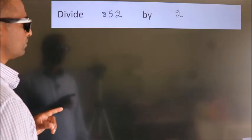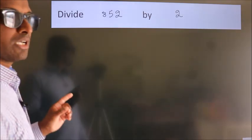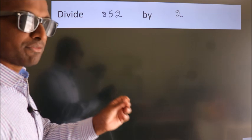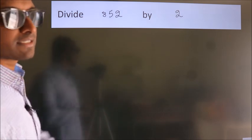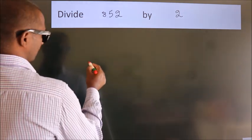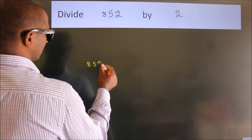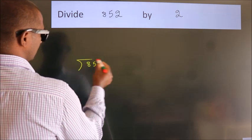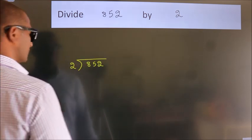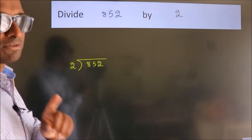Divide 852 by 2. To do this division we should frame it in this way. 852 here, 2 here. This is your step 1.